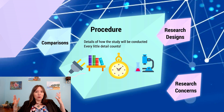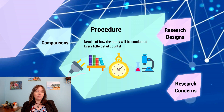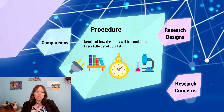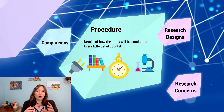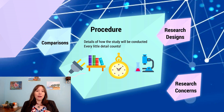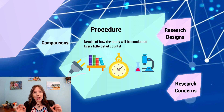Now that we have some ideas of what we want to study and what our variables and confounding variables could be, we have to think about the procedure of our study. This includes the details of how the study will be conducted — every little detail definitely counts. Procedures could include coming to a lab and drinking a certain substance, measuring reaction time, ensuring a certain voltage on a computer running a cognitive test, or the exact words you say to participants when preparing them for a survey.